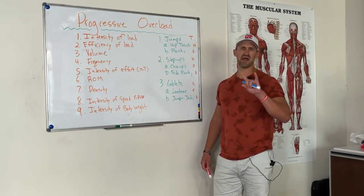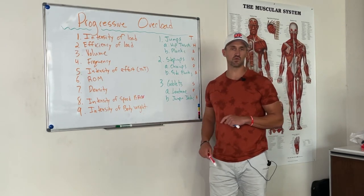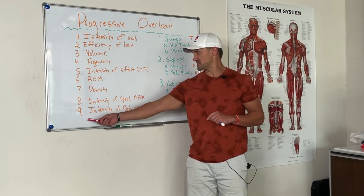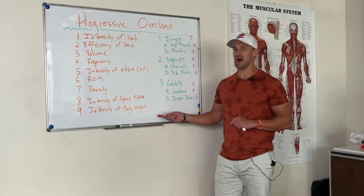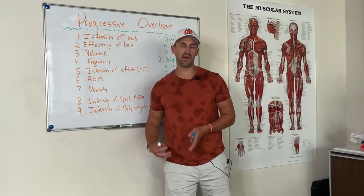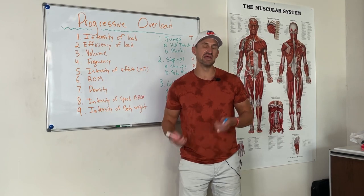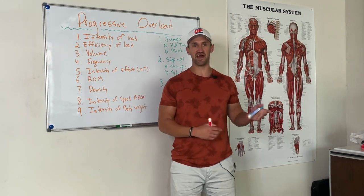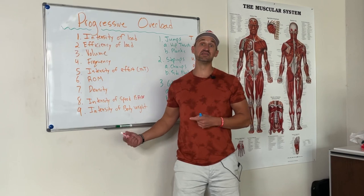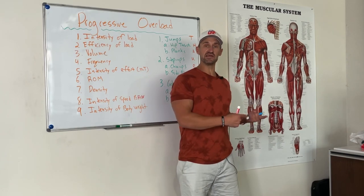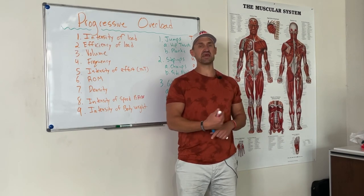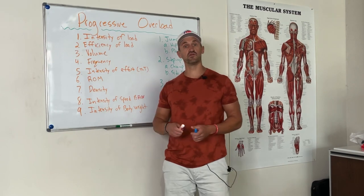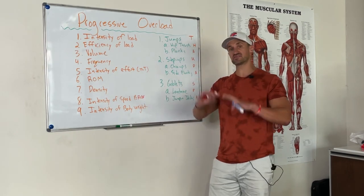We have weekly and bi-weekly classes — we go through the textbook and we'll get you to pass that sucker in 90 days. Last but not least, number nine: intensity of body weight. If you have a client who weighs 300 pounds and they do three chin-ups, then they lose 15 pounds and at the end of the month are still able to do three chin-ups, that's still progressive overload because the total mass has gone down.